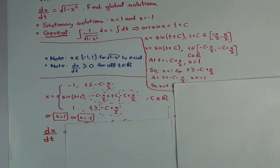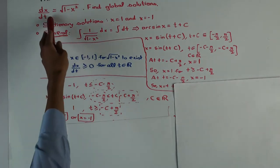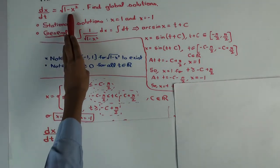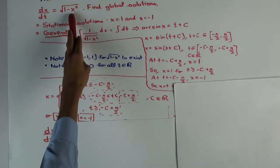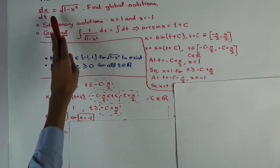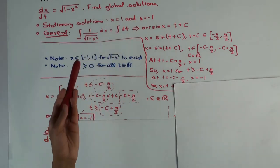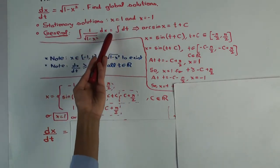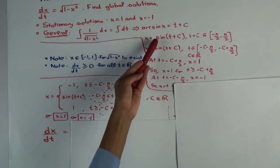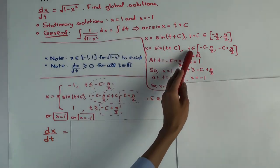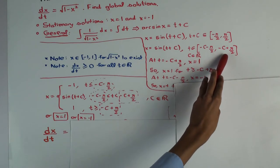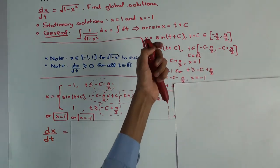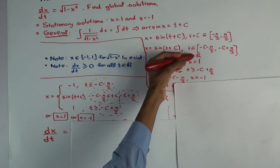When we were originally shooting this talk, I forgot to say something. We started with this differential equation, dx/dt = √(1 - x²). We got the stationary solutions — those are the roots of this, so the constant functions. And then we said for the non-stationary, you have to solve this as a separable differential equation. We got x = sin(t + c), where t is from -c - π/2 to -c + π/2, and c could be any real number, so that's the parameter.